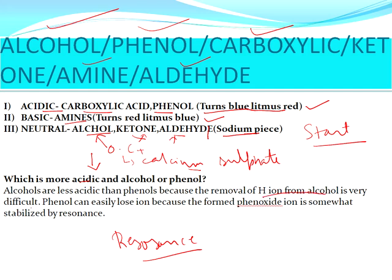Phenol is more acidic than alcohol because of the concept of resonance. The removal of H+ from alcohol is very difficult. Phenol can easily lose a proton because the phenoxide ion formed is stabilized by resonance, making phenol more acidic.